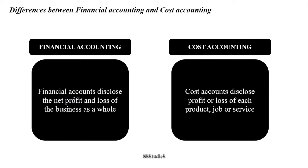Financial accounting discloses the net profit and loss of the business as a whole, whereas cost accounts disclose profit or loss of each product, job, or service. Cost accounts disclose profit or loss for each product manufactured, for each job undertaken, or for a particular service provided. Financial accounting looks into the whole picture in totality and finds out whether the business has incurred profits or suffered losses.